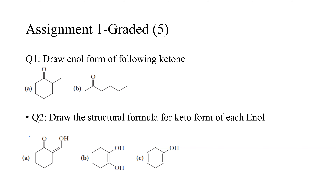For the assignment: the first question asks you to draw the enol form of the following ketones. The hint is that it will go for the alpha hydrogen, and a molecule can have more than one alpha hydrogen, so you have to draw all possible enol forms. The second question asks you to draw the structural formula for the keto form of each enol given. Work on it — I am trying to keep the videos short so everyone can get the information even with slow internet connectivity. Take care of yourself and bye.